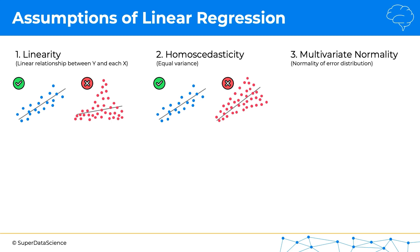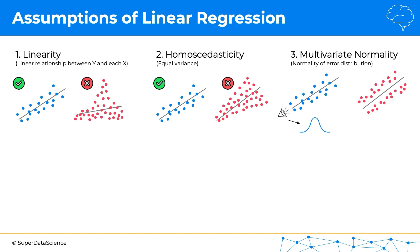The third assumption is multivariate normality, or normality of error distribution. If you look at the chart here on the right, you can feel that something is off. The best way to intuitively think about it is: if you look along the line of the linear regression, you want to see a normal distribution of your data points. In the case on the right, we can see something different, and so again we wouldn't apply a linear regression there.